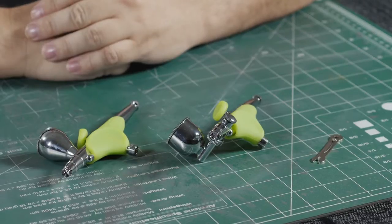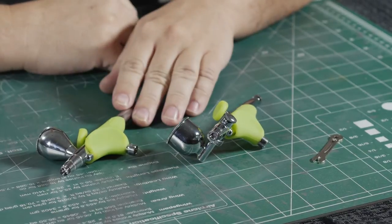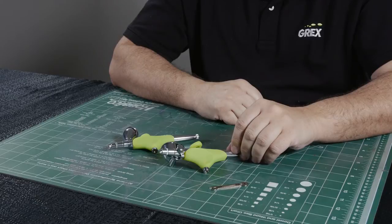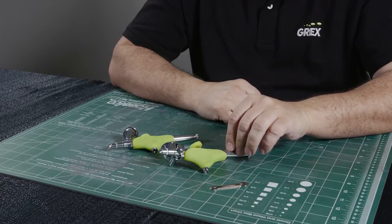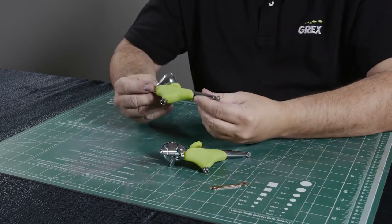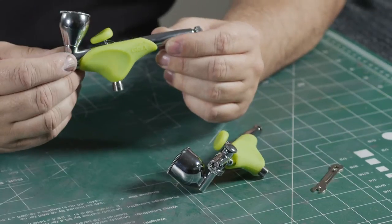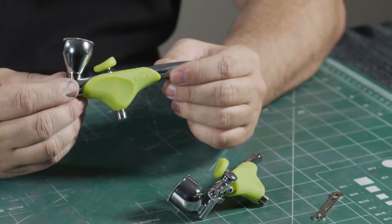With our new Genesis series airbrushes, we have two styles. We have the Gravity Feed XGI and we have the Side Feed XSI. Both airbrushes have the same internal parts, so for the sake of demonstration we will utilize the XGI for our disassembly and assembly process.